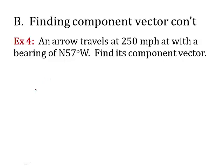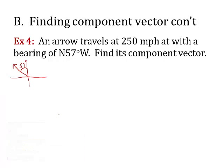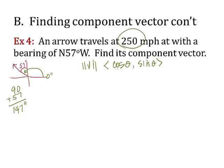Let's try another one. An arrow travels 250 miles an hour with a bearing of north 57 degrees west. Northwest is this direction, but remember the bearing angle is 57 right there. First thing I have to do is convert that to a vector angle starting here with 0 degrees. So if I measure this way, what I really only have to do is take 90 plus 57. That gives me 147 degrees. That's my vector angle.